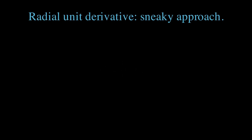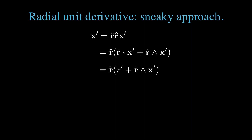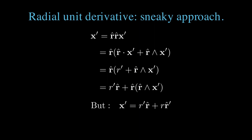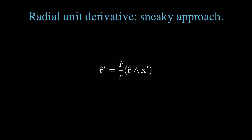Here's a sneakier way to come up with the same result. We can write x prime equals 1 times x prime, where 1 is r̂ times r̂. Factoring out r̂ and writing the geometric product of r̂ with x prime as the dot product plus the wedge product, we can use our lemma to identify r̂ dotted with x prime as r prime, the derivative of the scalar length. So x prime equals r prime times r̂ plus the rejection of r̂ from x prime. We can also expand the derivative x prime as r prime r̂ plus r r̂ prime, and notice that r times r̂ prime must equal r̂ times the bivector r̂ wedged with x prime. That gives us the same result.